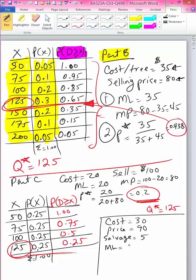So now, what is my marginal loss? My marginal loss right now is the $30, which it costs me. But then if I don't sell something, I can get $5 back. So now really my marginal loss is $25 at the end of the season.